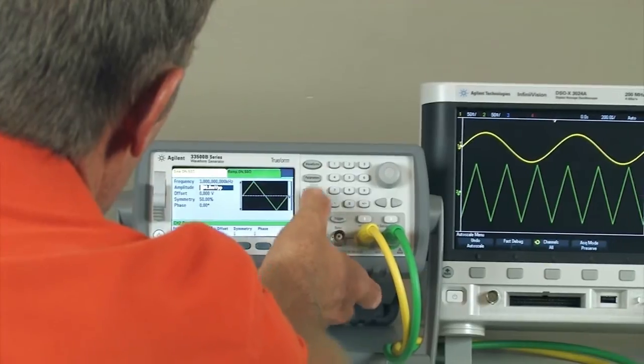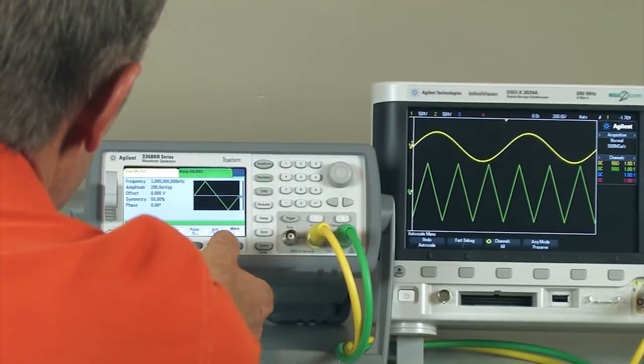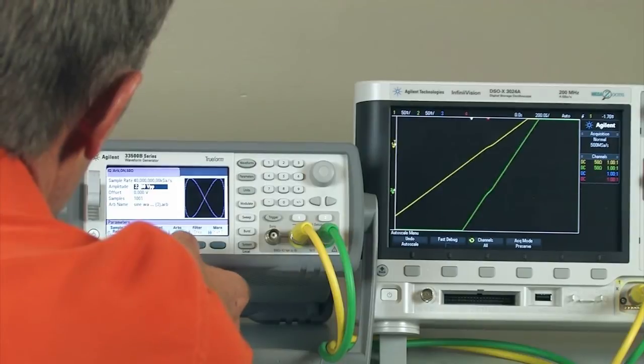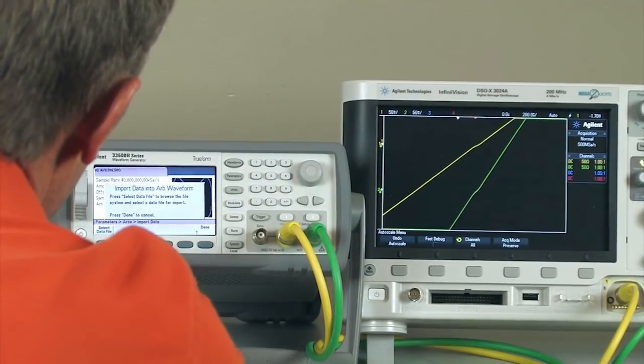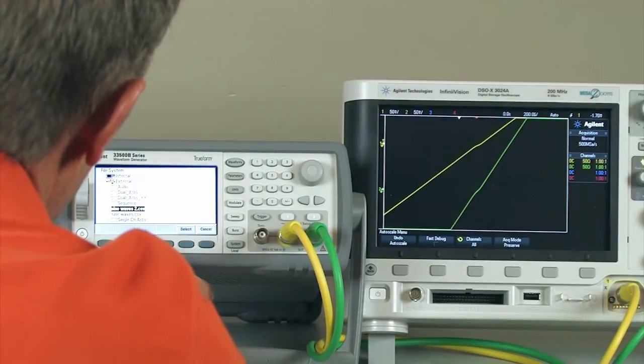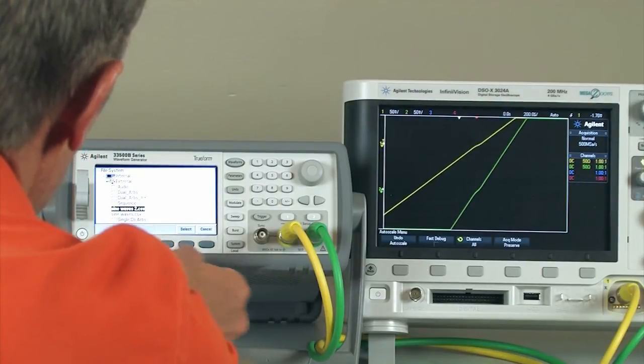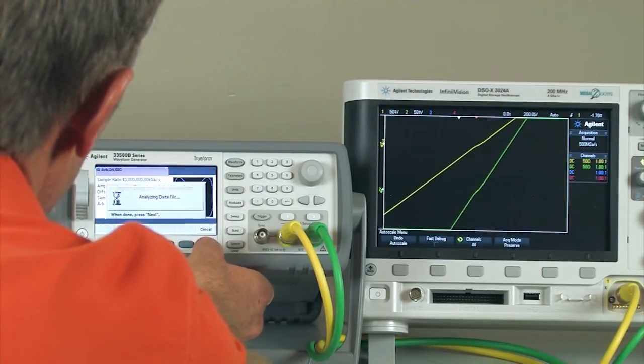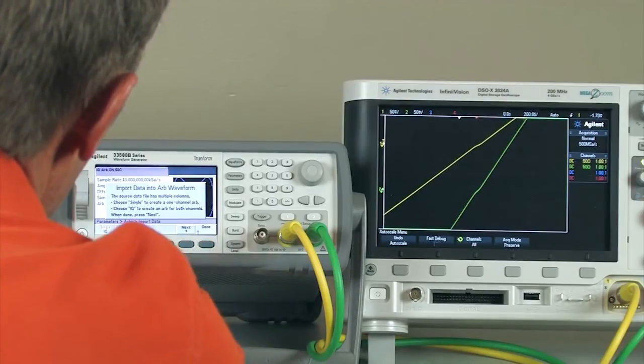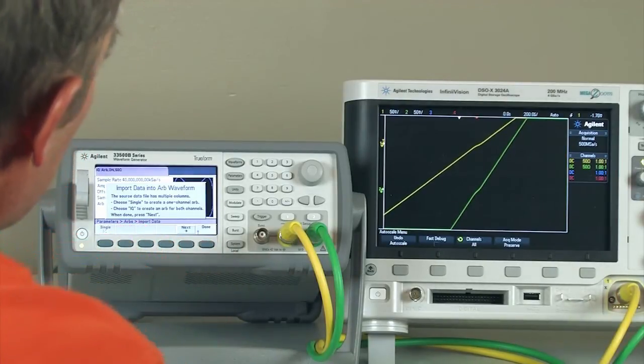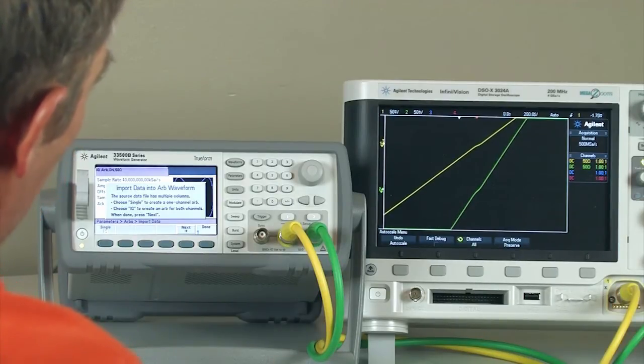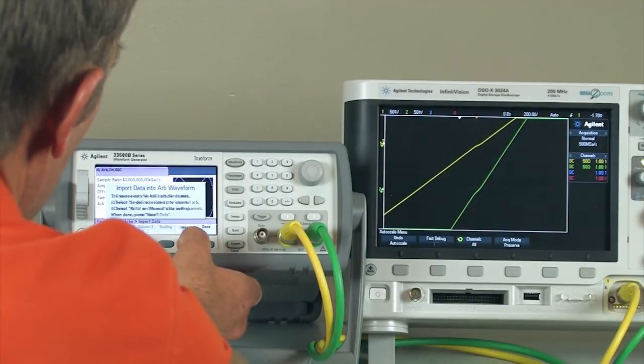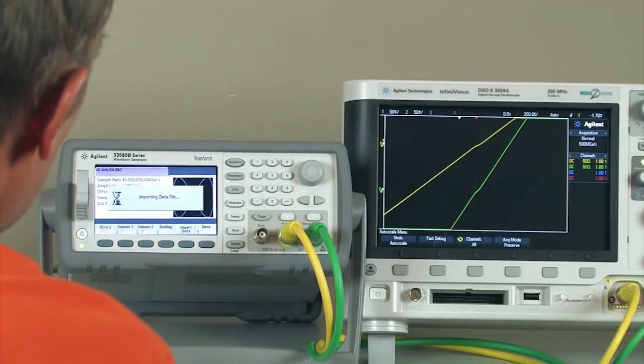Okay, so we'll go to waveforms, go to ARBs, and then I'm going to import the data. I'll select a data file which is out of my USB stick. I'll select it. And then I'm going to select to bring in the data as an IQ waveform, even though it's not an IQ waveform. But this allows the data pairs to be imported.